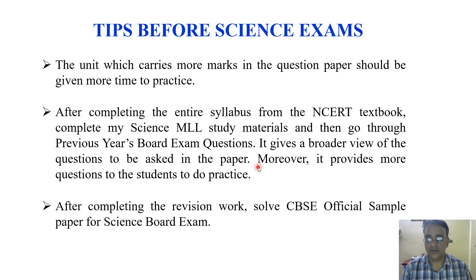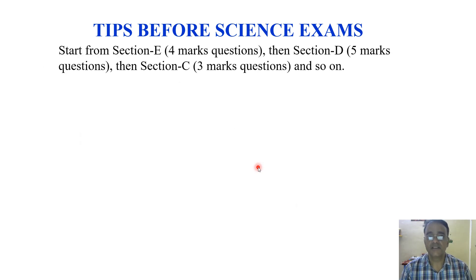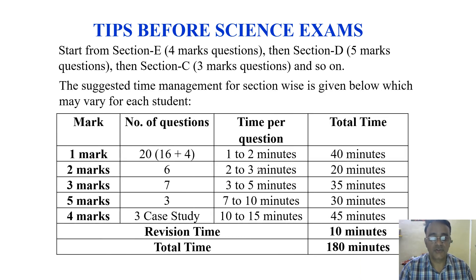One more tip: before the exam, start from Section E—that is, 4 marks questions, case study based questions—then Section D, 5 marks, then Section C, 3 marks questions, and so on. Means E, D, C, B, A. Or you can start from Section D, then E, C, B, A. But I will suggest attempting Section A, 1 mark questions, last because many students take more time for 1 mark questions.